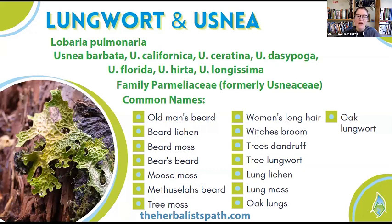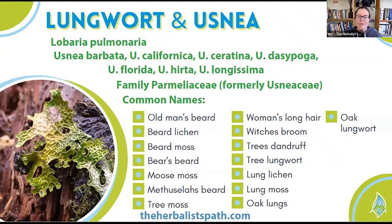And then we have usnea. There are many different species of usnea. The word usnea is actually derived from an Arabic word meaning moss. There are several different species of them. The barbata means beard or barbed, and oftentimes usnea will be called beard moss, beard lichen, bear's beard, or old man's beard — because it looks like a beard. And lungwort can also be called lung lichen, lung moss, oak moss, and all kinds of things.